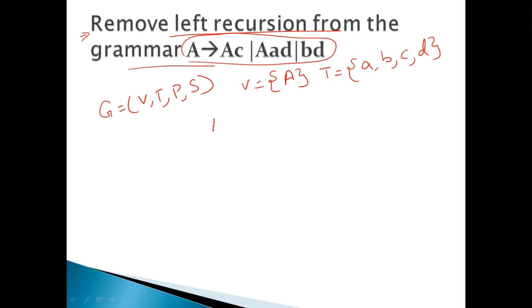If you remember, if we are having production rules of the form A is rewritten as A alpha, A delta, and A is rewritten as beta and gamma, these are the A productions, left recursive ones, and these are the non-A productions.